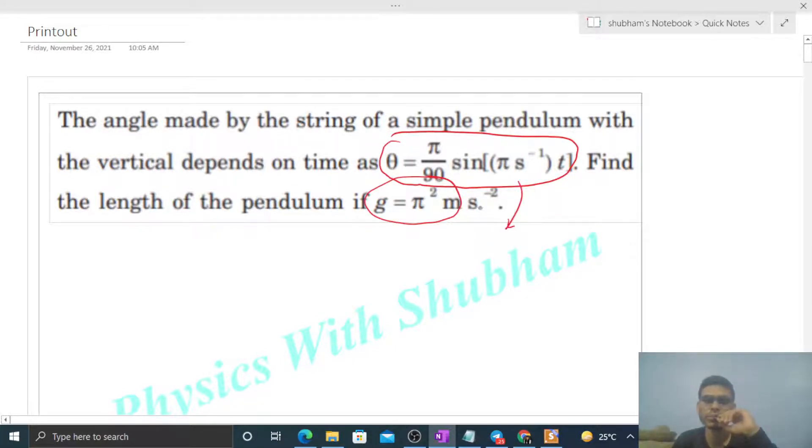We're given the angular SHM equation: theta equals theta naught sine omega t. If we compare this equation, then theta naught will be pi/90, which is the amplitude of this angular SHM, and omega's value will be pi.